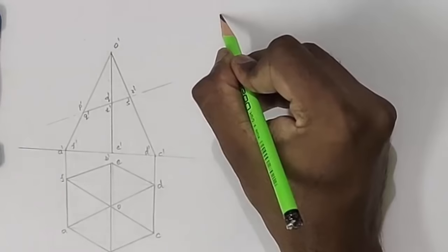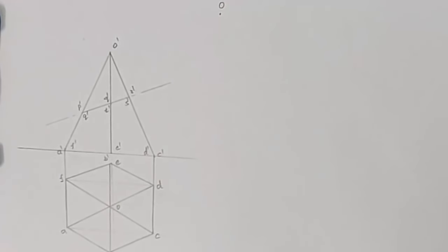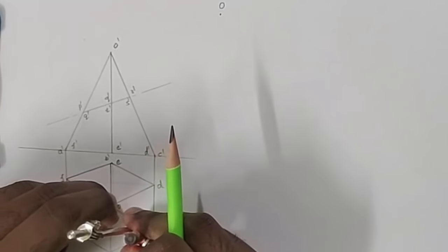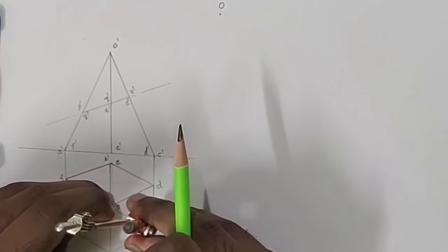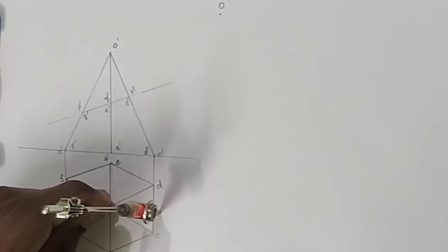Then take any arbitrary point O here. From that O, measure the true length of the lateral edge. For that we have to rotate any edge, maybe OC or OD. I am rotating OC and making it parallel to VP. So now it is parallel to VP, so draw a line from it vertically.